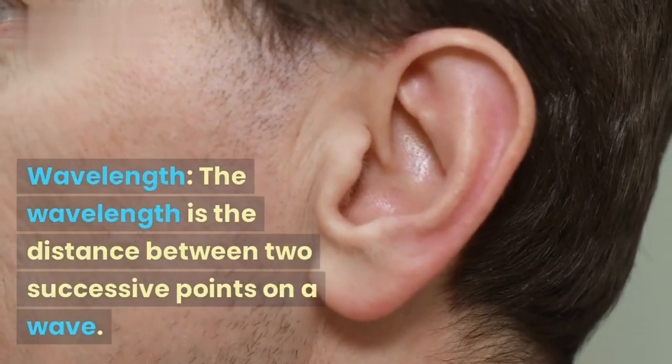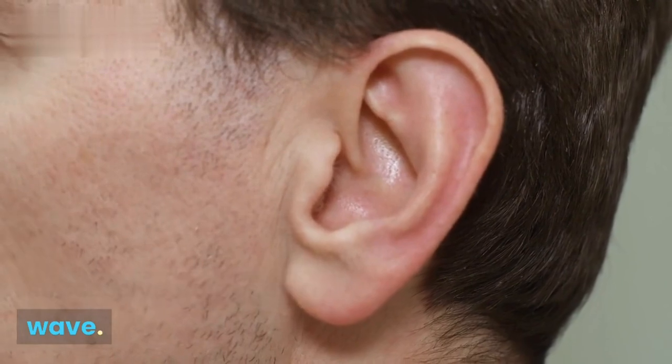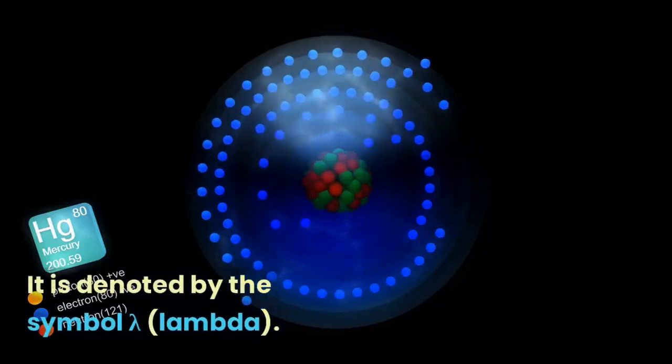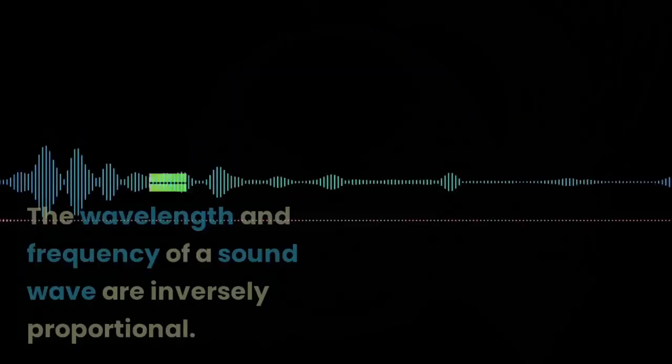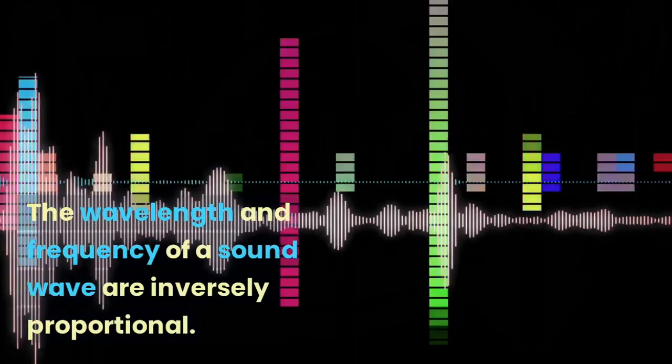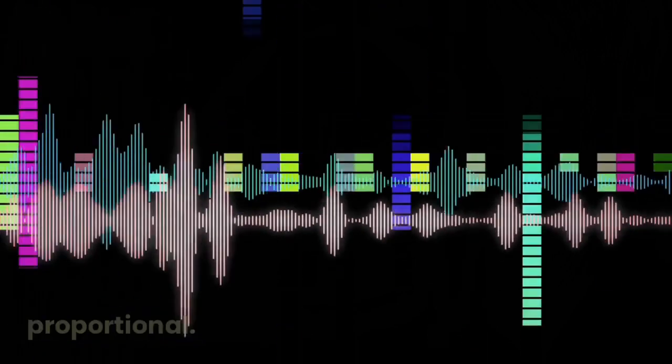Wavelength. The wavelength is the distance between two successive points on a wave. It is denoted by the symbol lambda. The wavelength and frequency of a sound wave are inversely proportional. The higher the frequency, the shorter the wavelength, and vice versa.